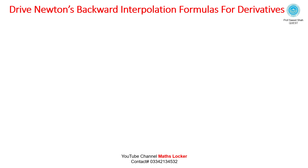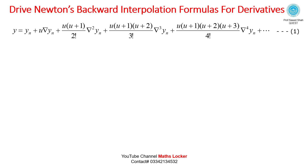Deriving Newton's backward interpolation formulas for derivatives. We start from the Newton's forward interpolation formula: Y = YN + U·ΔYN + U(U+1)/2!·Δ²YN + U(U+1)(U+2)/3!·Δ³YN + U(U+1)(U+2)(U+3)/4!·Δ⁴YN + ..., say equation 1. Where U = (x - xn) / h, say equation 2.